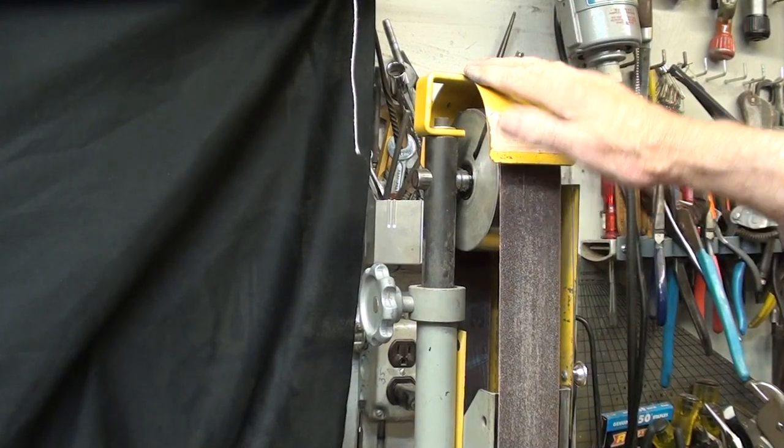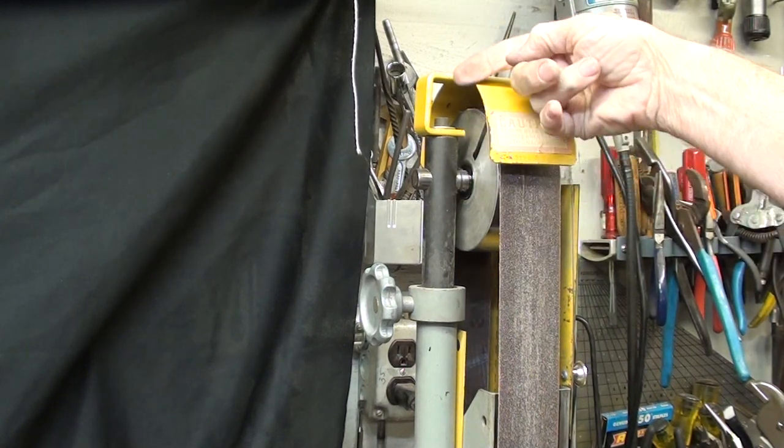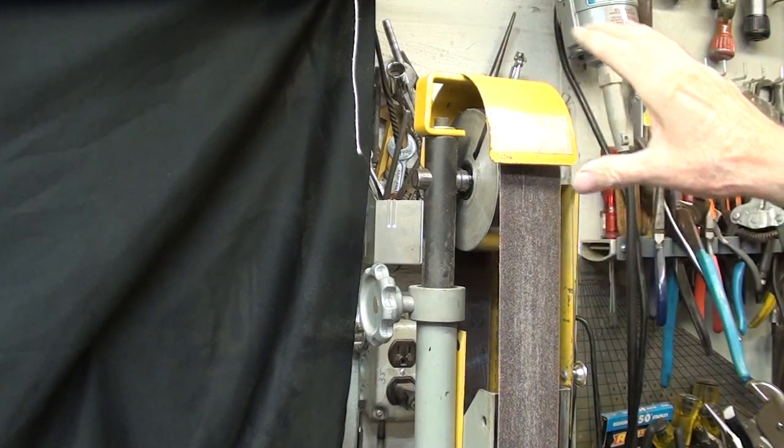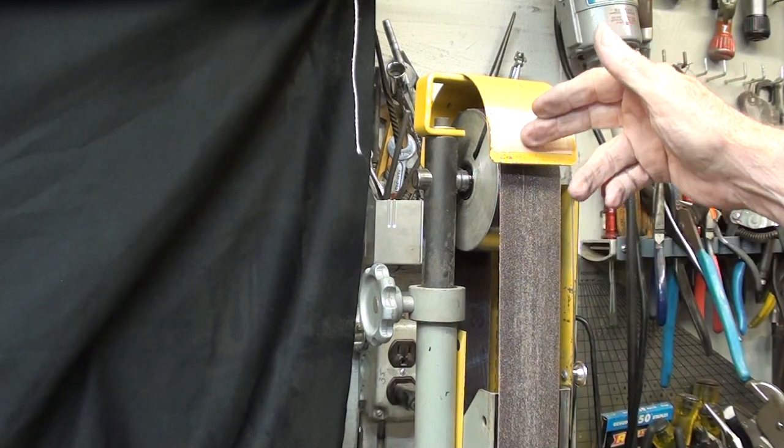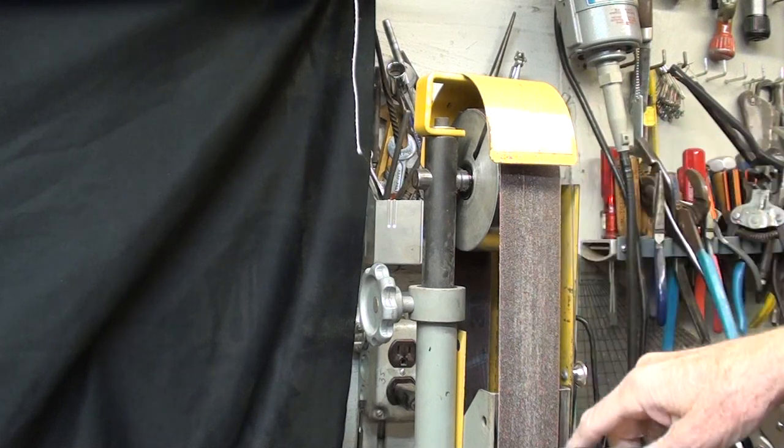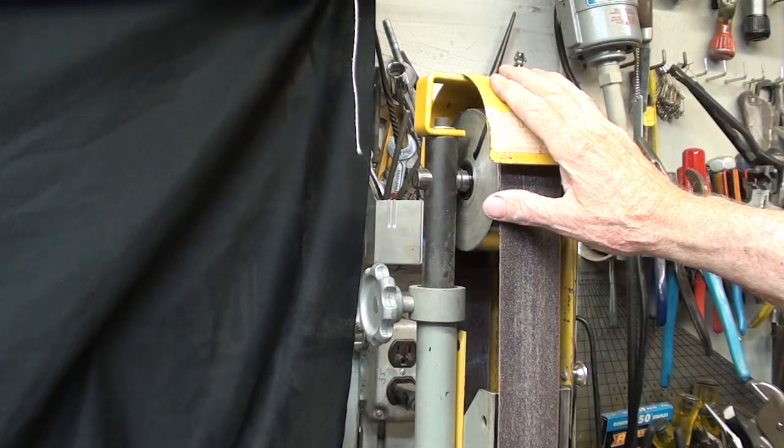The purpose of the top guard, as far as I'm concerned, is to keep sparks and debris from following the wheel around and literally throwing it into your face, because this is about the height of your head depending on what bench that you have on. So this deflects all of the debris and the sparks causes it to go straight down. So to me this is probably more important of a guard than the other one.